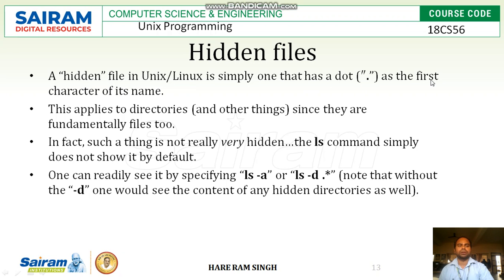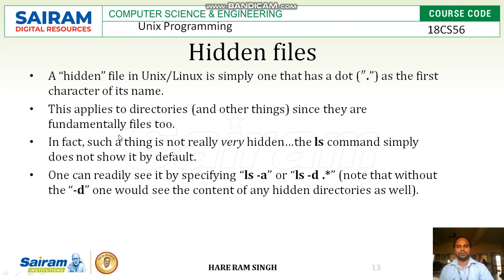A hidden file in Unix or Linux is simply one that has a dot as the first character of its name. Hidden files will not be shown generally on the terminal. They start with the dot character. If you use dot-star in a search, those files can be displayed. This also applies to directories, since directories are fundamentally files too.